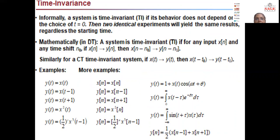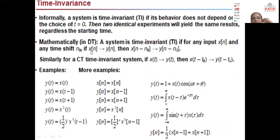The next important property is time invariance. A system is time invariant if its behavior does not depend upon the choice of t equals zero — two identical experiments will yield the same results regardless of the starting time. For a discrete system, if x[n] produces output y[n], shifting the signal by n minus n₀ also shifts the response. This shows the system does not change with time — it is a time invariant system.